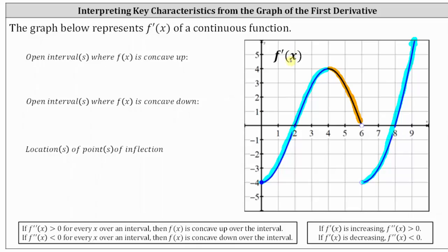So if the derivative function is going uphill from left to right, it's increasing. If it's going downhill from left to right, the derivative function is decreasing. The intervals for which the derivative function is increasing indicates the second derivative is positive, and therefore f of x is concave up, and where the derivative function is decreasing, the second derivative is negative, indicating the function is concave down.